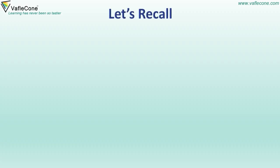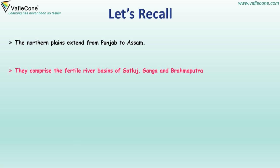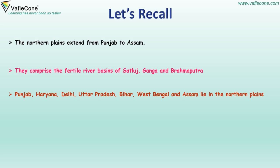Now let's recall: The Northern Plains extend from Punjab to Assam. They comprise the fertile river basins of Satlaj, Ganga, and Brahmaputra. Punjab, Haryana, Delhi, Uttar Pradesh, Bihar, West Bengal, and Assam lie in the Northern Plains. Farming is the main occupation of the people.